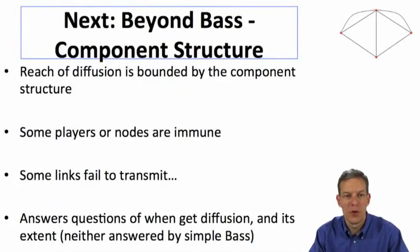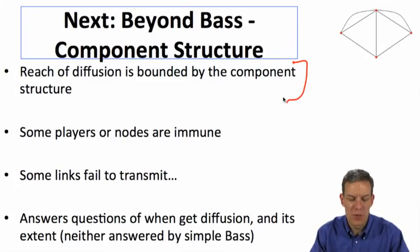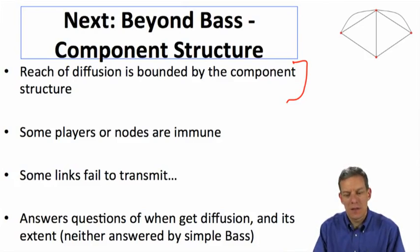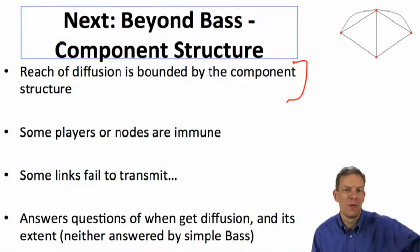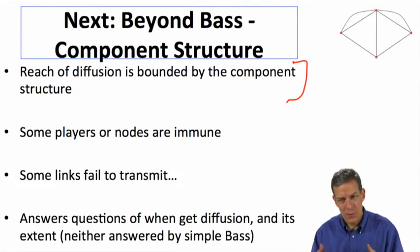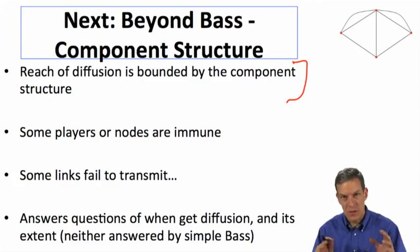Beyond the Bass structure, what we're going to look at next is component structures and start bringing the network in. So here, more generally, the reach of diffusion is going to be bounded by some component structure. So if there's certain groups of people that don't interact with others, then things aren't going to move across one group. It could be that some players or nodes are immune. So if we're talking about the flu, people could have a vaccine against it and maybe not catch it. Or it could be that there's certain individuals who just wouldn't go see certain kinds of movies, who will never see a horror movie. And so you could think of them as being immune to certain kinds of diffusion. It might be that some relationships between individuals are transmitting with higher probability than others. So if we start looking at the network structure, we're going to see that there could be some probabilistic transmission. So the answers to questions of when we get diffusion and its extent aren't answered so easily by the simple Bass model. And we'll have to enrich these kinds of diffusion models in order to answer those. And so that's what we'll take a look at next.